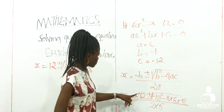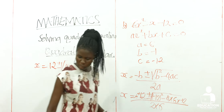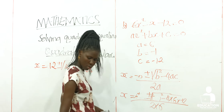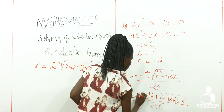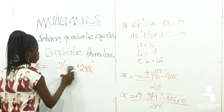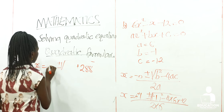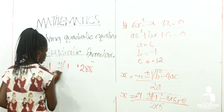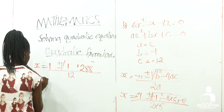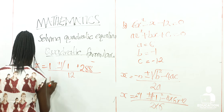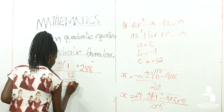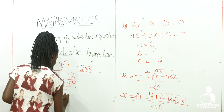Let's make a correction: B is negative 1, so here we're supposed to have negative 1 instead of 12. So negative negative 1 becomes a positive, and this becomes 1. All this out of 2 times 6, which is 12. So we shall continue further as X is equal to 1 plus or minus root of 289, but the whole of this out of 12.